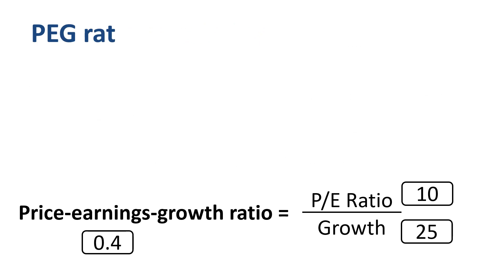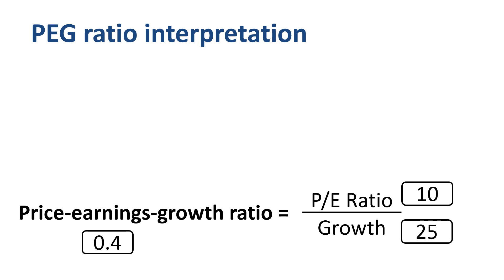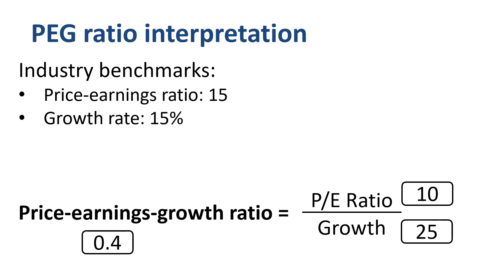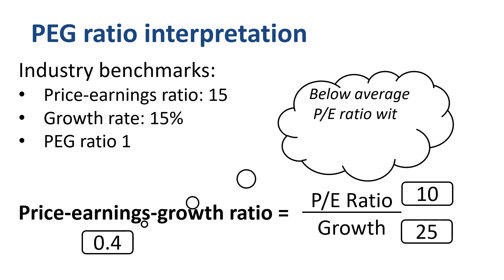How do we interpret a PEG ratio of 0.4? For that, we need to look at the benchmark numbers for the industry that the company is operating in. If the average P/E ratio for the industry is 15 and the average growth rate for the industry is 15%, then the industry PEG ratio is 1. That would mean that a company with a PEG ratio of 0.4 would have a below-average P/E ratio with above-average growth, and might be viewed as undervalued, worthy of further research and a possible buy.